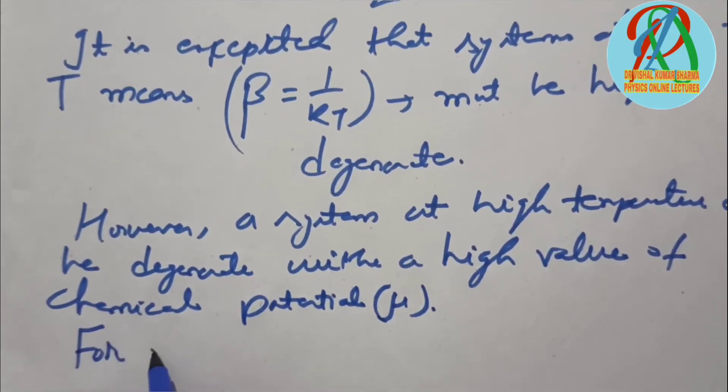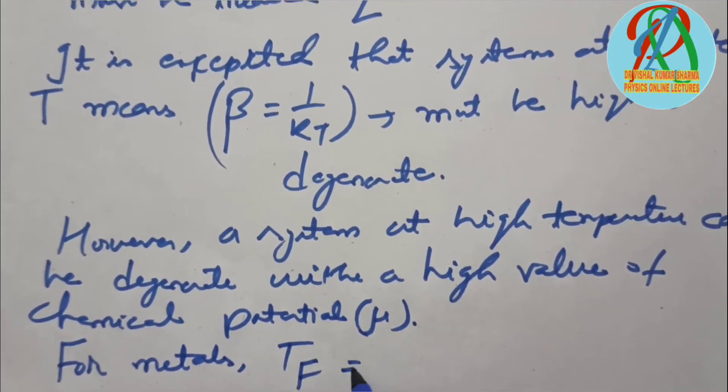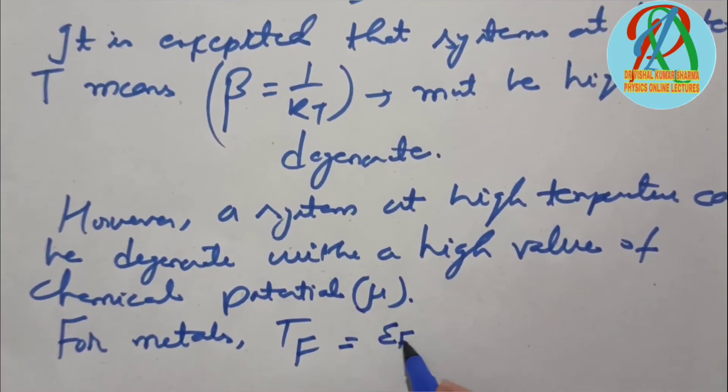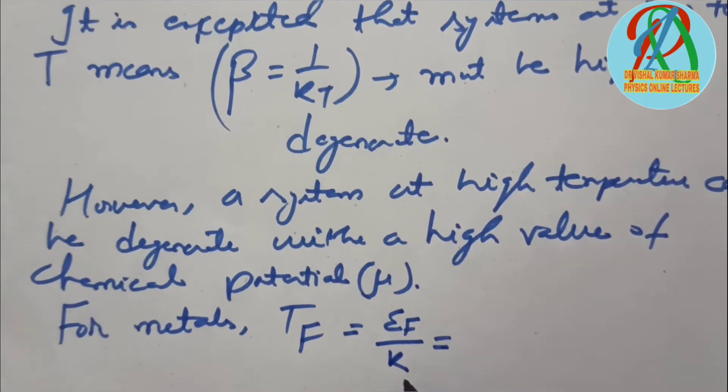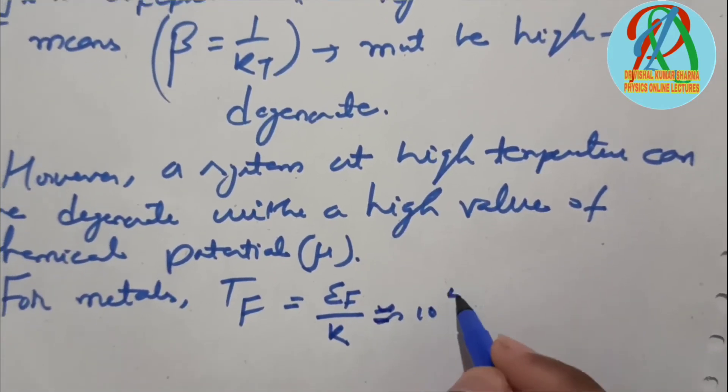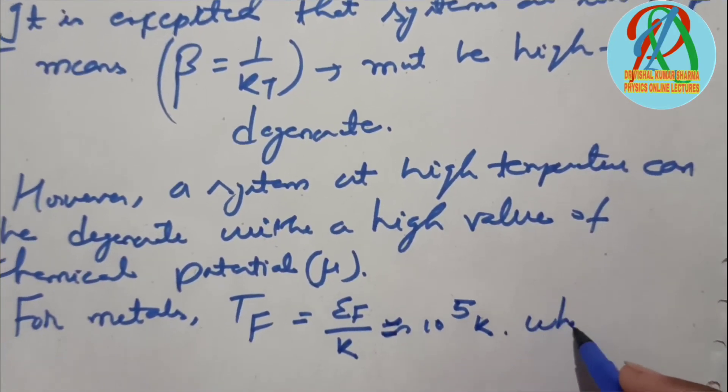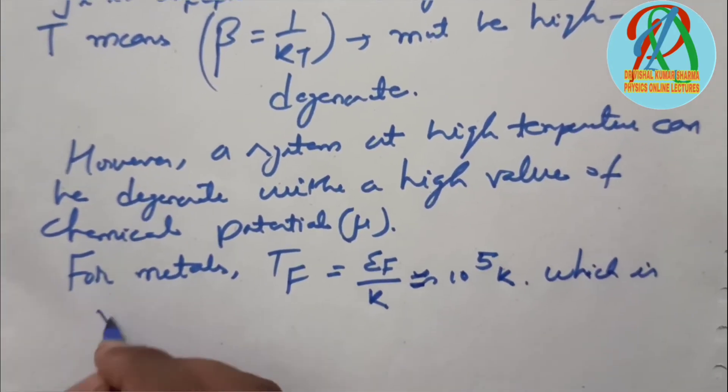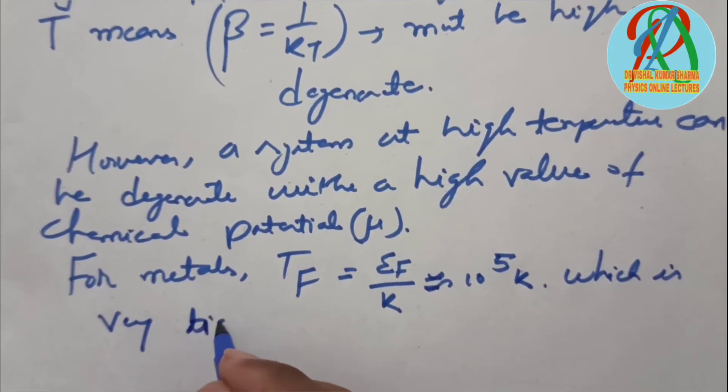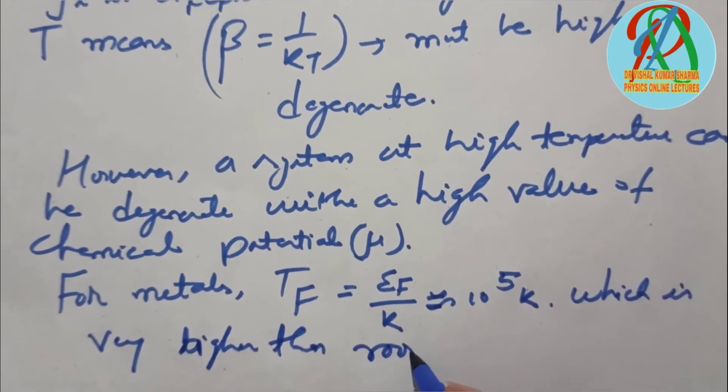For metals, the Fermi temperature T_F, which equals ε_F/k where k is Boltzmann's constant, comes out to be approximately 10^5 Kelvin, which is very much higher than room temperature.